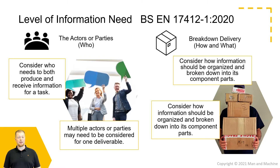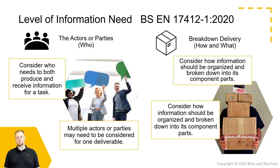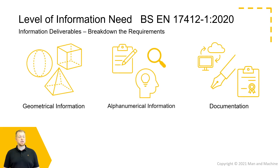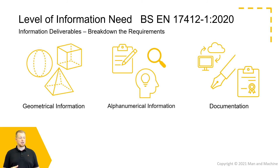Finally, looking at the how and what area, we want to consider the ways in which this information should be organised and broken down into its component parts, and how it should be delivered to each one of those actors or parties. The three core areas are: geometrical information — our 3D modelling information or even 2D information as part of a wider model; alphanumerical information — parameters, information data, or metadata contained within our consolidated model environment; and documentation — handover information at various gateway stages, from reports and warranties through to 2D drawing outputs.